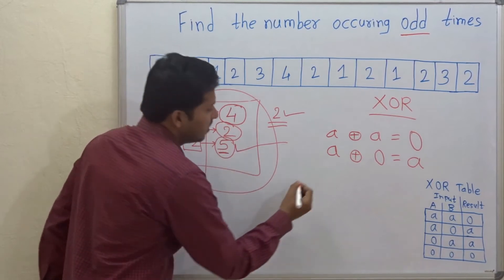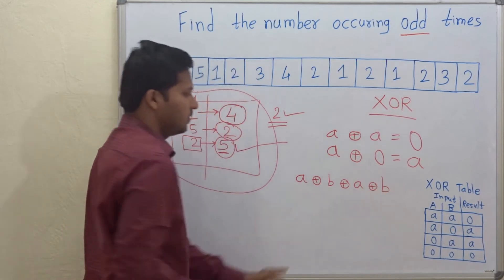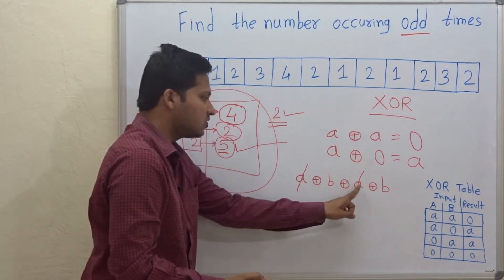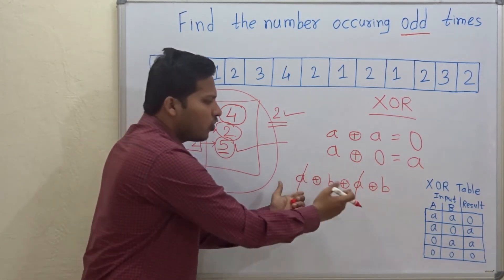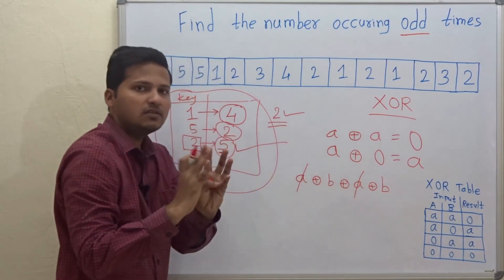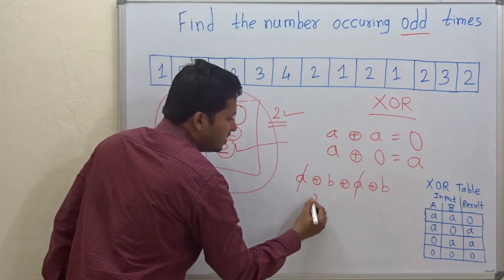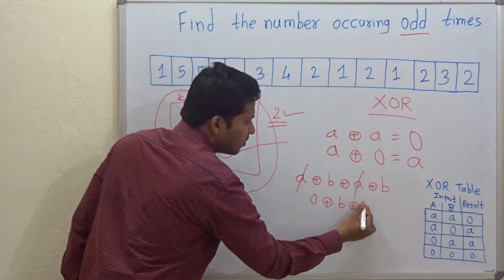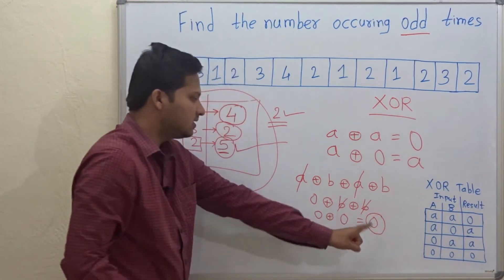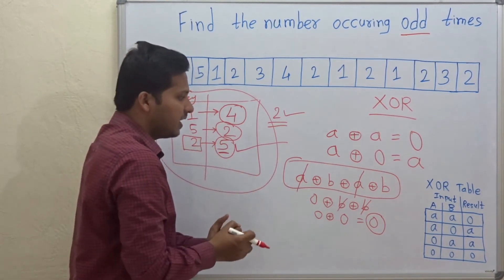The idea is: suppose we do A XOR B XOR A XOR B. Then A and A will cancel each other, because A XOR A equals 0. You can treat this XOR operation like addition — even if A is not adjacent to the other A, you can still XOR them. So they cancel, giving 0 XOR B XOR B. That also cancels, giving 0 XOR 0 = 0. This means no element in this series is occurring an odd number of times.